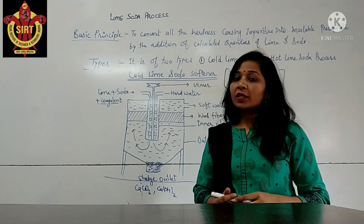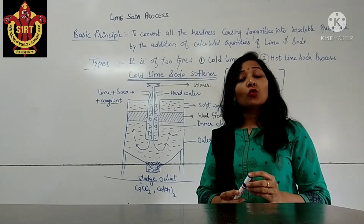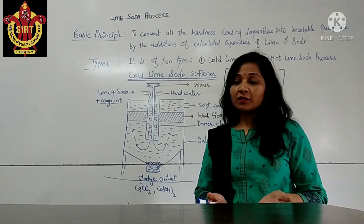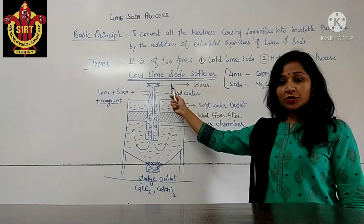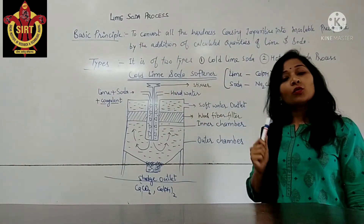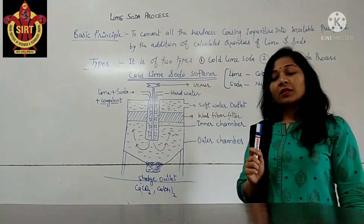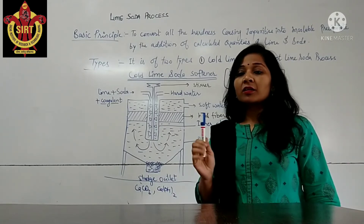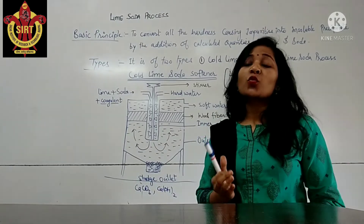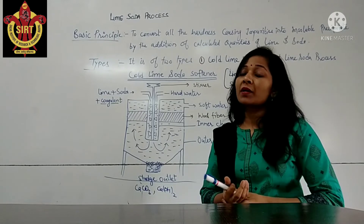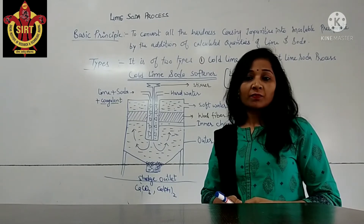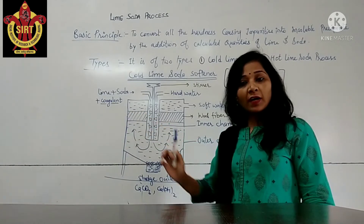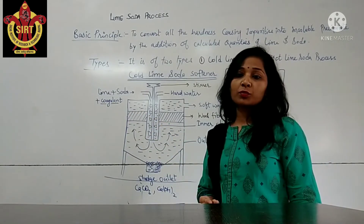The reason for using coagulant is to convert fine precipitate into coarse precipitate. As we all know, when the reaction takes place at room temperature — that is the cold lime soda process — the precipitation that occurs is very fine and it cannot be separated easily by filtration. So here we use coagulant to convert fine precipitate into coarse precipitate.